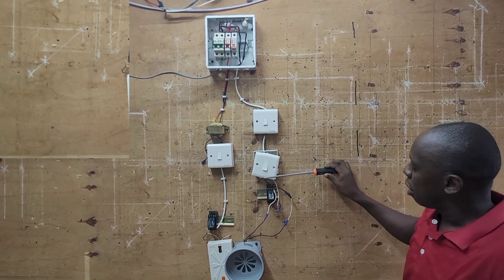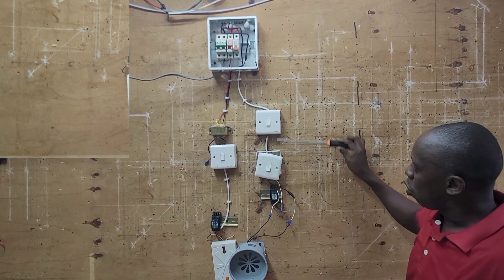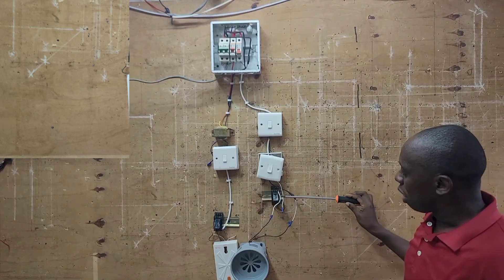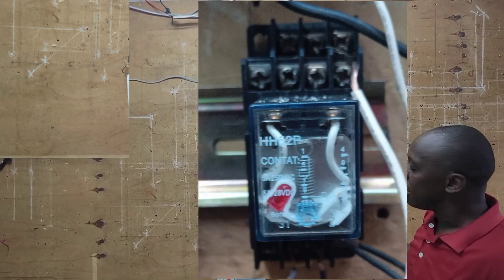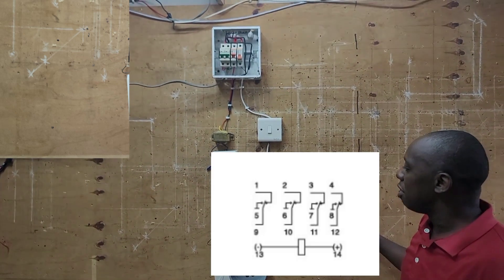In our case, we are using two bell switches to control our siren together with the bell relay which has the circuit as shown.